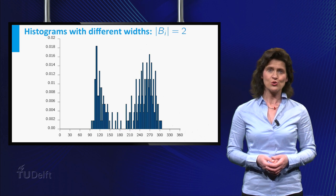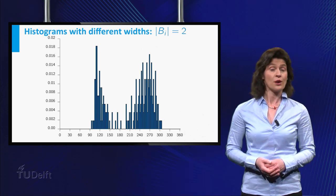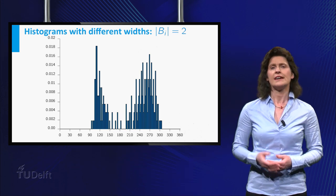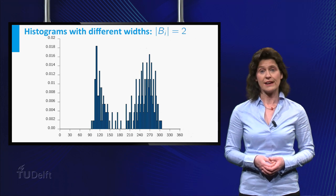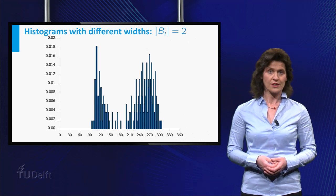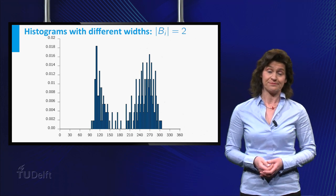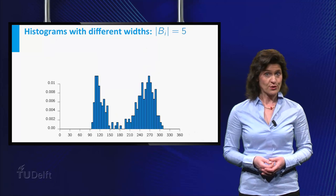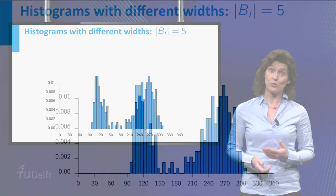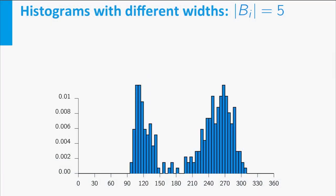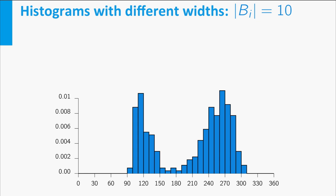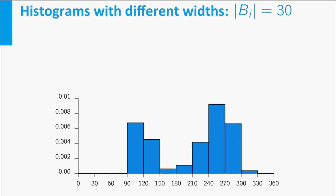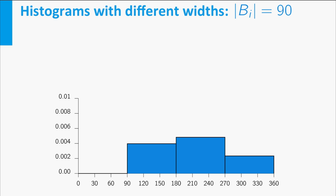Now what happens if you choose another width for the intervals? Well, let's see. Here is a histogram of the same data with interval width 2. You see you get a messy figure. Here is a histogram of the same data with interval width 5, one with width 10, one with width 30, and one with width 90.